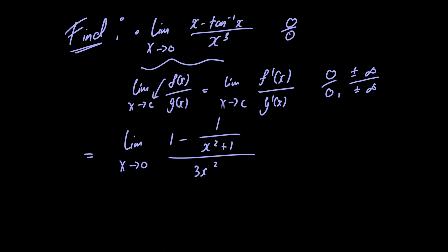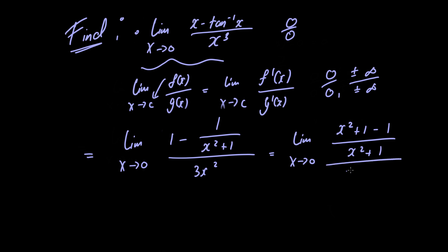We can simplify the numerator by cross multiplying. Doing so gives us the limit as x approaches 0 of x squared plus 1 minus 1, divided by x squared plus 1, and this is all divided by 3x squared.